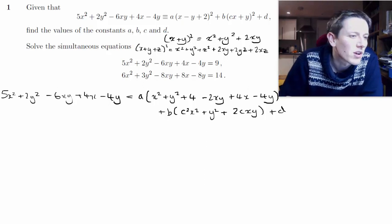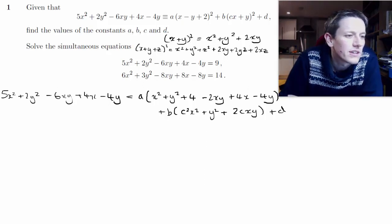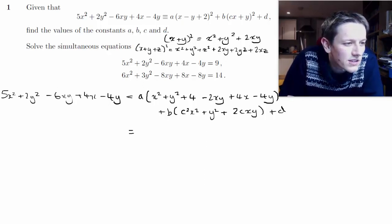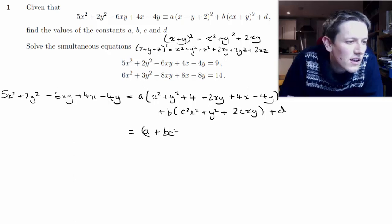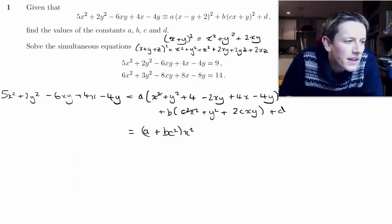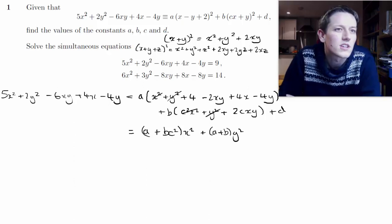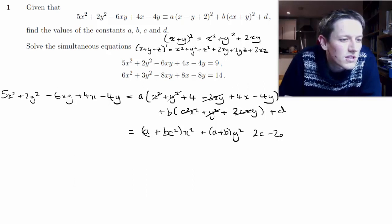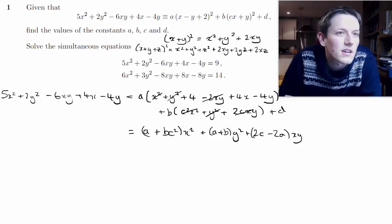Now we play the game of equating coefficients, matching terms in x² with x², etc. In the x² terms I've got ax² and bc²x². In y² I've got a·y² and b·y², giving (a + b)y². For the xy term I've got −2a and +2c, so (2c − 2a)xy.